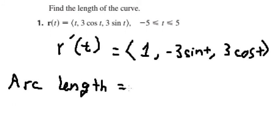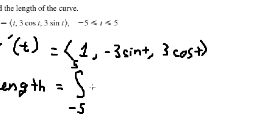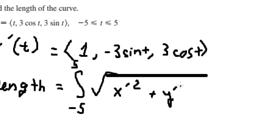We have the integral from negative five to positive five, and then we have the square root. We know that this is the first derivative of x squared, first derivative of y squared, and first derivative of z squared, and we have dt.